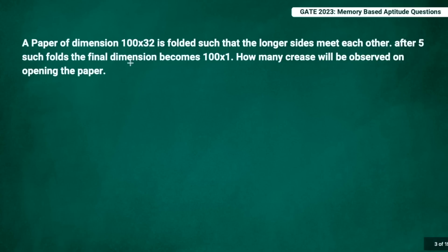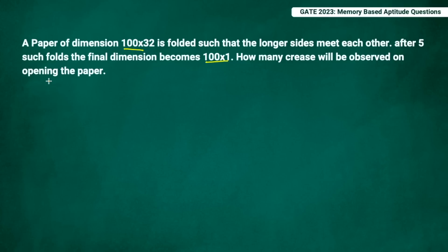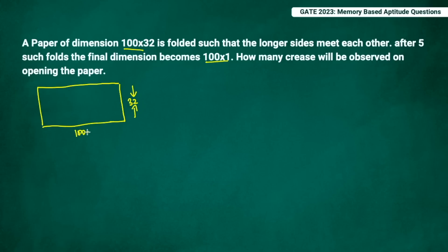This was a very good question. A paper of dimension 100×32 is folded such that the longer sides meet each other, and after five such folds the final dimension becomes 100×1 cm. The question asks how many creases will be observed on opening the paper. The paper is rectangular — 32 cm on one side and 100 cm on the other — and you fold it so the 32 cm sides meet each other.